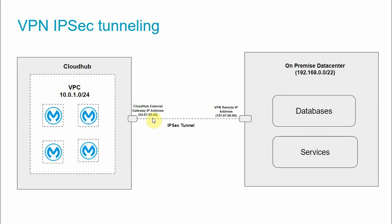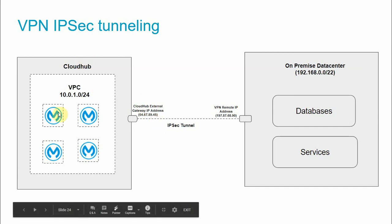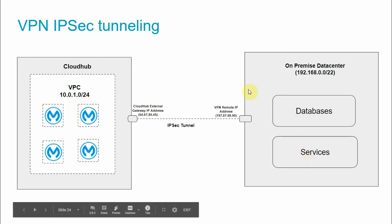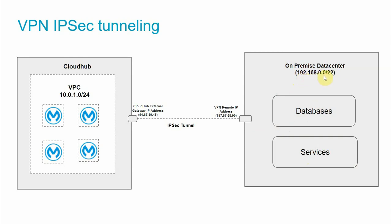To summarize: I have CloudHub, and within CloudHub I have set up a VPC with a CIDR mask of 10.0.1.0/24. I have deployed multiple MuleSoft applications, and those applications need to access databases and services on the on-premise data center, which has a subnet of 192.168.0.0/22. The database and services exist within that particular CIDR block.